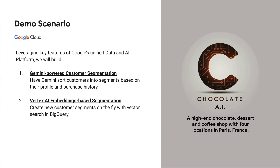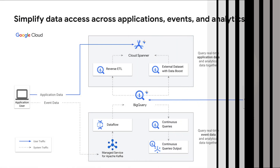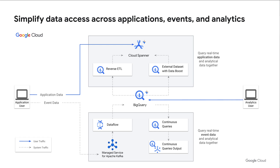To demonstrate these capabilities, we'll follow the journey of a fictional chocolate company called Chocolate AI — a small, high-end chocolate and coffee shop operating four brick-and-mortar stores in Paris, France. They have a small but dedicated marketing team, and they face challenges with ineffective marketing campaigns due to their broad, one-size-fits-all approach to messaging. To help them overcome these challenges, Chocolate AI's analytics team just deployed a new marketing analytics solution built on the Google Data and AI platform.